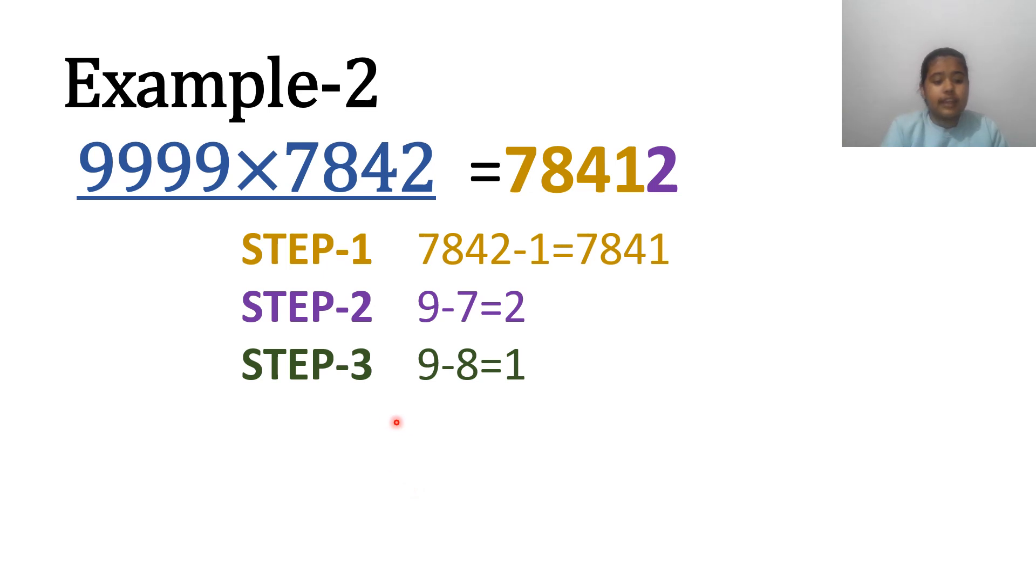Step 3. Take the next 9 and subtract 8 from it. That is, 9 minus 8 equals 1. Write down this 1 immediately after 2.